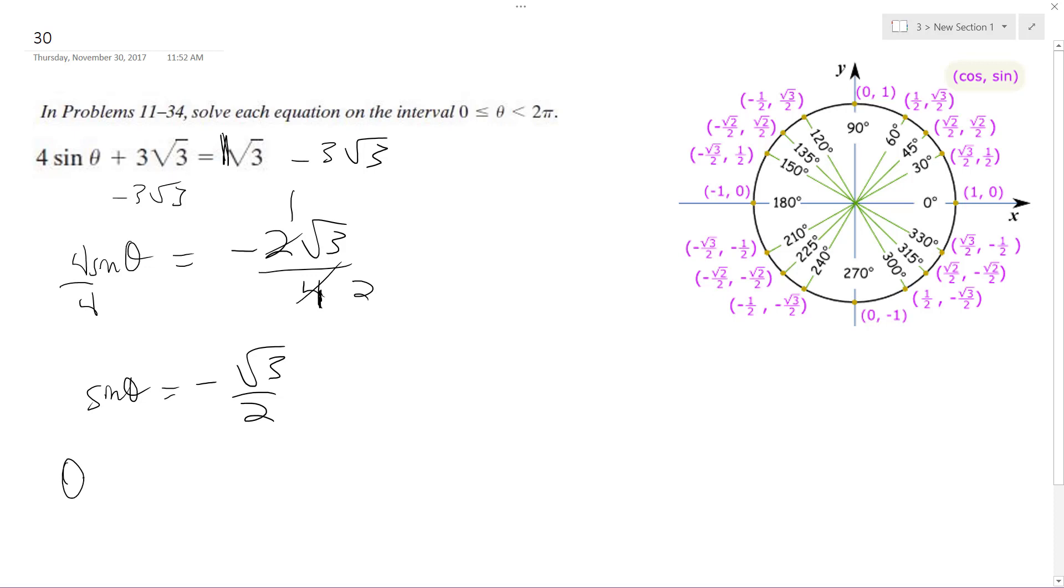If I take the inverse sine of both sides, negative root 3 over 2.